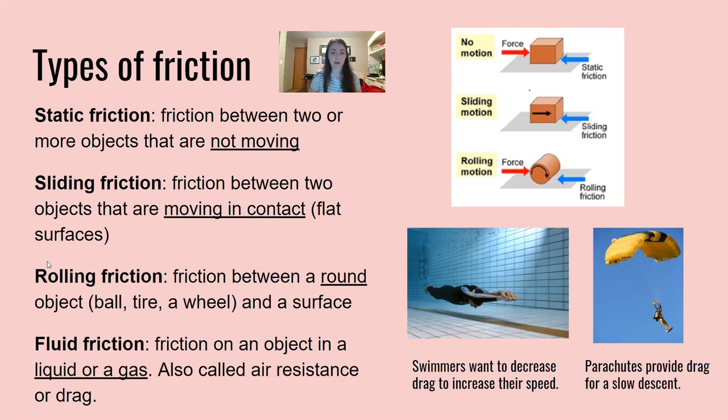Rolling friction is friction between a round object like a ball, a tire, or a wheel and a surface. Think about like a soda pop can rolling. The reason it's rolling is due to the friction on the object. Without friction, actually objects would have a much harder time being able to roll like they do on the ground.